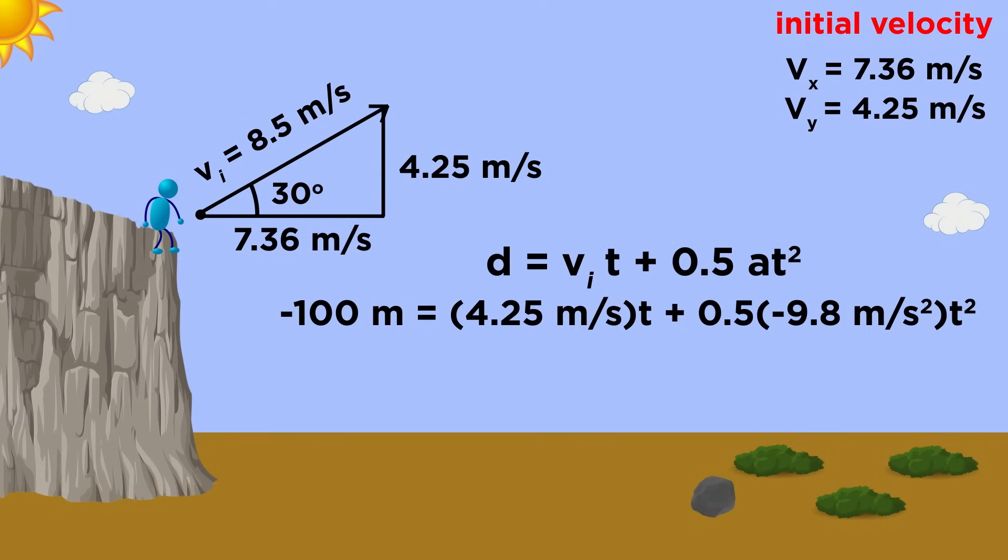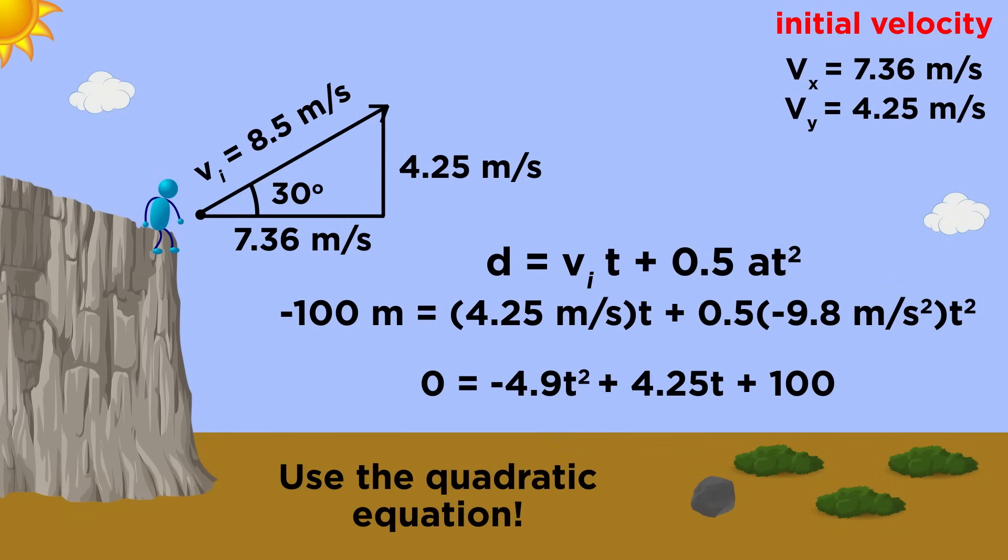So we can plug the numbers in, negative 100 for the displacement, 4.25 for initial velocity, and our usual acceleration. Putting it into standard form and plugging into the quadratic equation, we will take the positive result for t, and say that the rock will be in the air for 4.97 seconds.